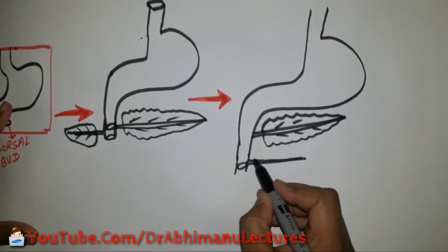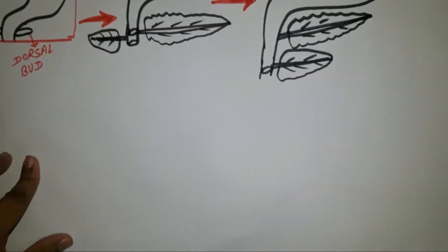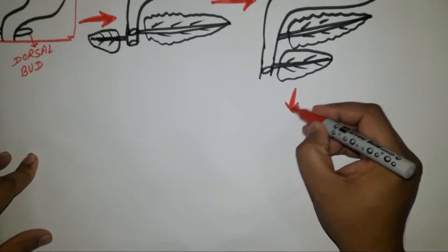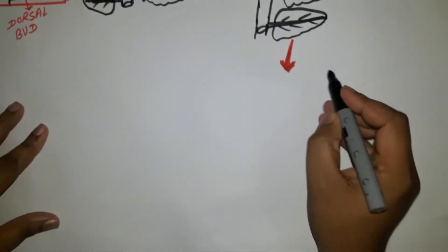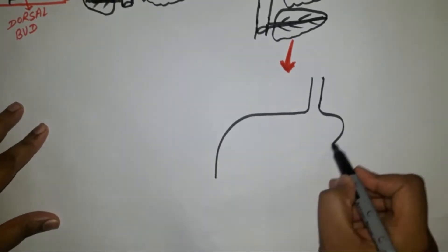With rapid growth of right duodenum wall, the ventral pancreatic bud shifts from the right to left and lies just below the dorsal pancreatic bud.